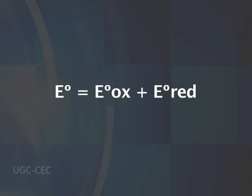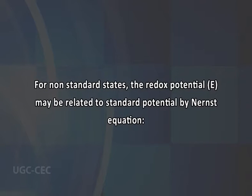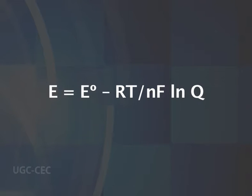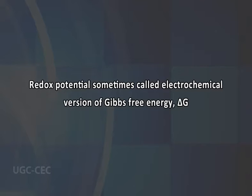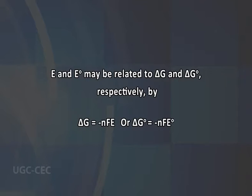The potential of the overall reaction at standard state is: E⁰ = E_oxidized + E_reduced, where E_oxidized and E_reduced are the oxidation half-reaction and reduction half-reaction, respectively. For non-standard states, the reduction potential may be related to standard potential by the Nernst equation: E = E⁰ − (RT/nF) × ln Q, where R is the gas constant, T is absolute temperature, n is the number of electrons involved, F is the Faraday constant, and Q is the reaction coefficient. The redox potential is sometimes called the electrochemical version of Gibbs free energy (ΔG), and E and E⁰ are related to ΔG and ΔG⁰ by: ΔG = −nFE and ΔG⁰ = −nFE⁰.